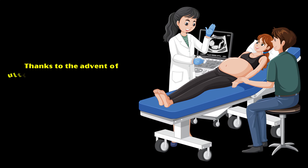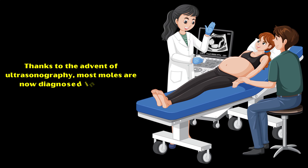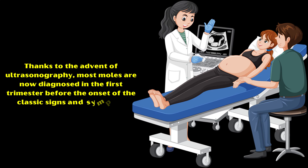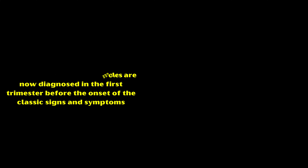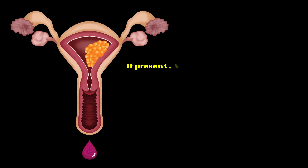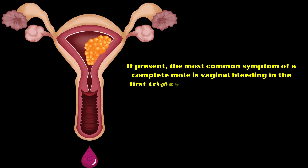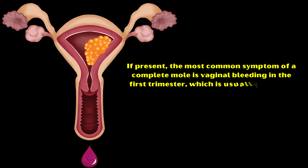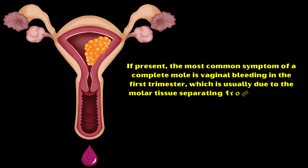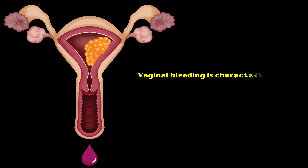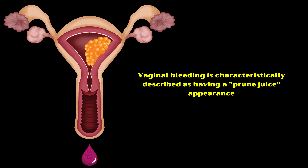Thanks to the advent of ultrasonography, most moles are now diagnosed in the first trimester before the onset of the classic signs and symptoms. If present, the most common symptom of a complete mole is vaginal bleeding in the first trimester, which is usually due to the molar tissue separating from the decidua, resulting in bleeding. Vaginal bleeding is characteristically described as having a prune juice appearance.